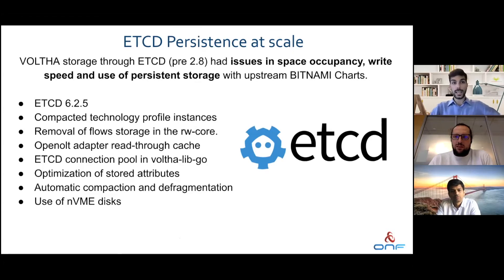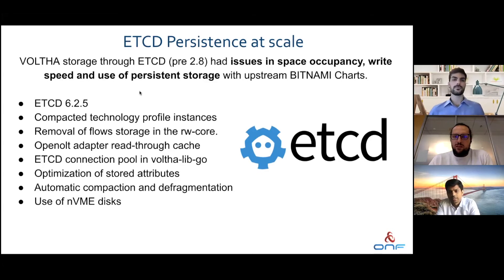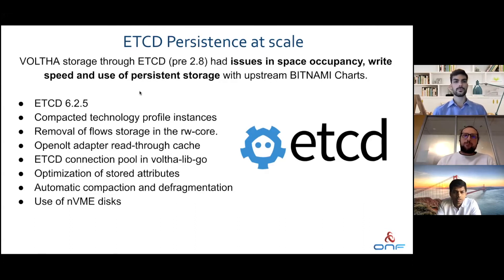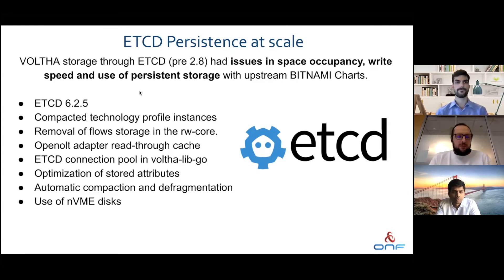Now Girish will talk about what we did for persistency at scale during 2.8. The VOLTHA storage through etcd, prior to the 2.8 release, had issues in space occupancy, write speed, and use of persistent storage. With upstream Bitnami charts used prior to 2.8 at version 5.4.2, the 2.8 release moved to version 6.2.5 of the etcd charts. In the process we optimized a lot of data stored on the etcd store, like compacting the technology profile instances, removal of flow storage in the read-write core, and optimizing many other stored attributes.